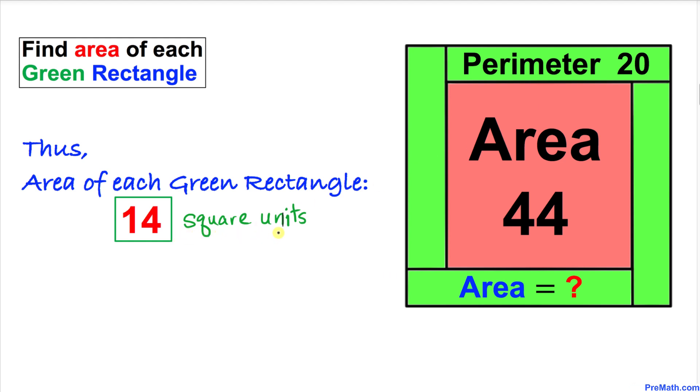So the area of each green rectangle turns out to be 14 square units. Thanks for watching, and please don't forget to subscribe to my channel for more exciting videos. Bye.